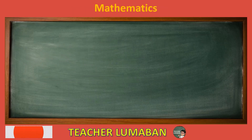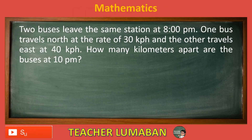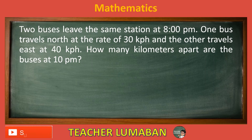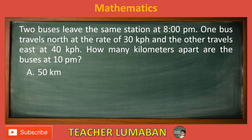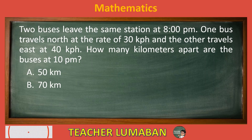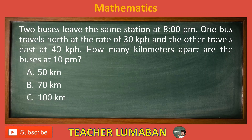Two buses leave the same station at 8 p.m. One bus travels north at the rate of 30 kilometers per hour and the other travels east at 40 kilometers per hour. How many kilometers apart are the buses at 10 p.m.? Letter A: 50 kilometers. Letter B: 70 kilometers. Letter C: 100 kilometers. Letter D: 140 kilometers.